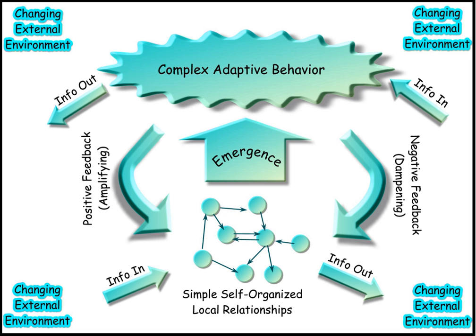A logical system, or for short, a logic, is a formal system together with its semantics. According to model-theoretic interpretation, the semantics of a logical system describe whether a well-formed formula is satisfied by a given structure. A structure that satisfies all the axioms of the formal system is known as a model of the logical system. A logical system is sound if each well-formed formula that can be inferred from the axioms is satisfied by every model of the logical system. Conversely, a logical system is complete if each well-formed formula that is satisfied by every model of the logical system can be inferred from the axioms.